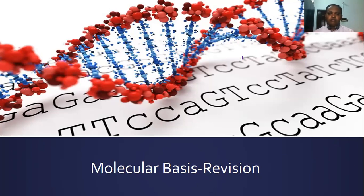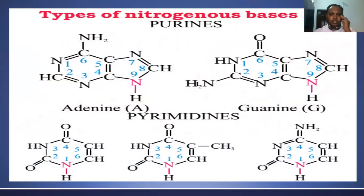We are going to see one revision here, covering some important topics. DNA and RNA molecules are both made up of four different types of nucleotides. The type of nucleotide found in DNA is deoxyribonucleotide and in RNA is ribonucleotide. The difference between deoxyribonucleotide and ribonucleotide is only the pentose sugar.